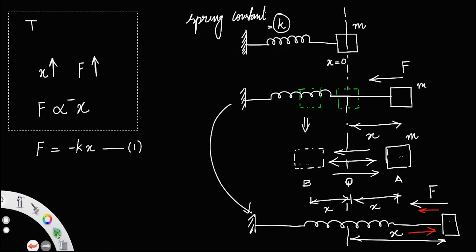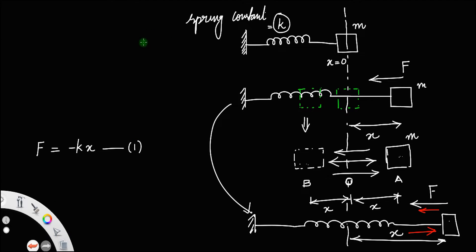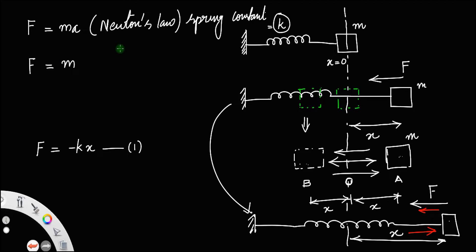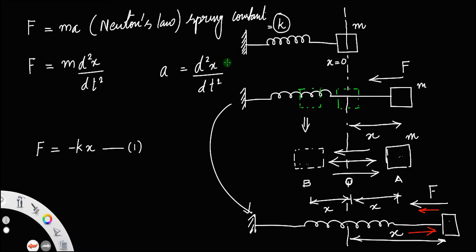According to Newton's second law, force equals mass times acceleration: F = ma. Acceleration is the second derivative of displacement, that is d²x/dt². Since velocity v = dx/dt, acceleration = dv/dt = d²x/dt². Let us call this equation 2.